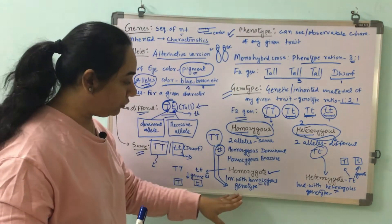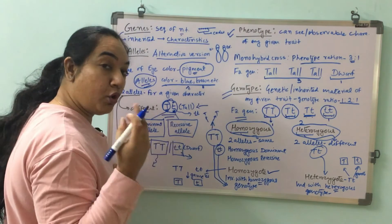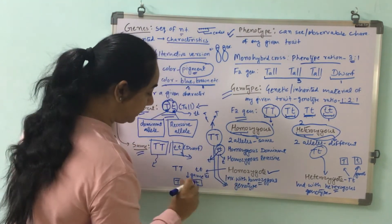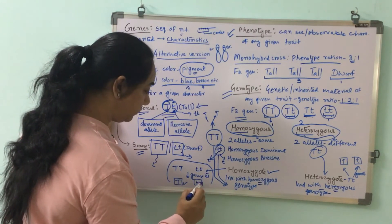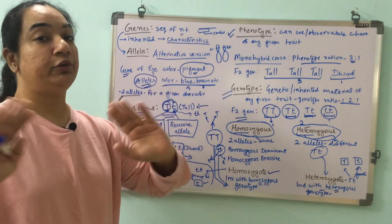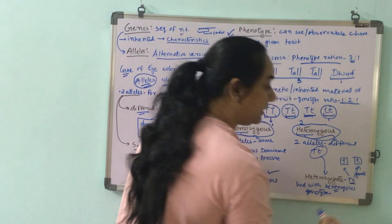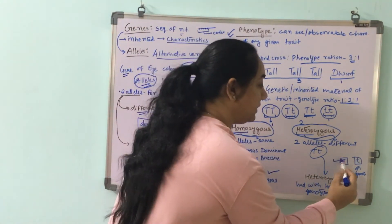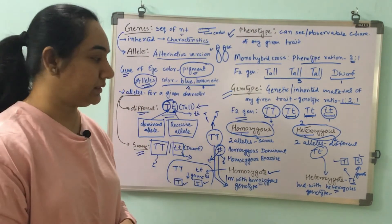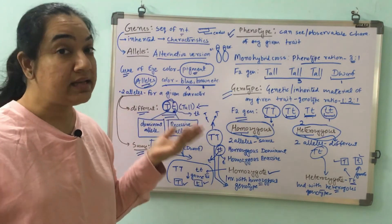One last point: what kind of gametes will these individuals produce? If an individual is capital T capital T, it will produce only capital T gametes — both gametes are the same. Small t small t also produces only small t gametes. So gametes from a homozygous individual are always of the same type. But in a heterozygous individual with capital T and small t, the gametes will be of two types — capital T and small t. This is an important point: in heterozygous individuals gametes are of two types, but in homozygous individuals gametes are of only one type.